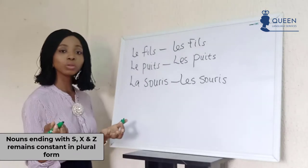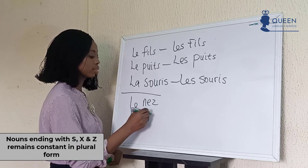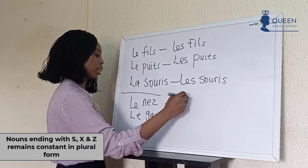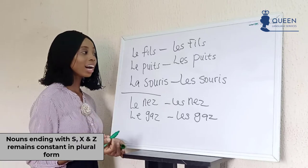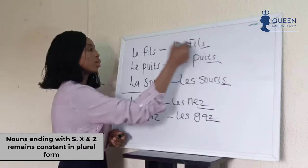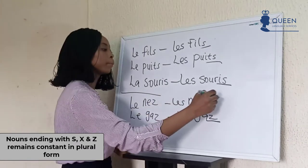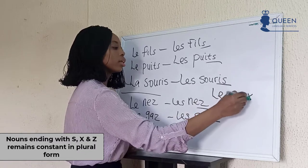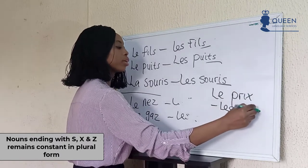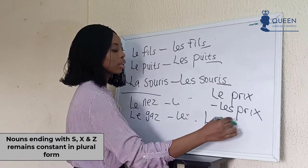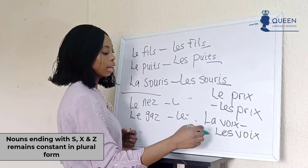Let's look at words that end with -z. We have 'le nez,' 'le rez.' We see that we're not adding or removing anything — it remains constant. For words with ending -x, we have words like 'le prix' — the plural form would be 'les prix.' We have 'la bois' — the plural form would be 'les bois.' We have 'la loin' — similarly it remains the same.